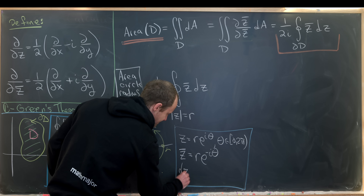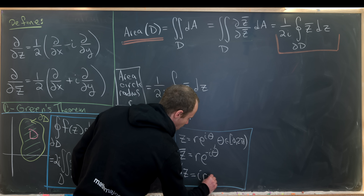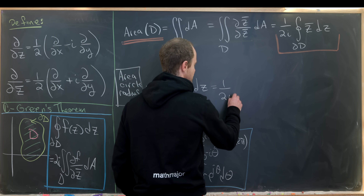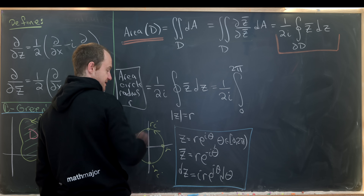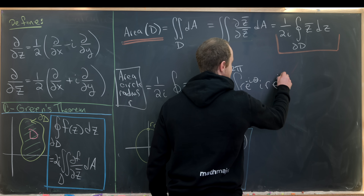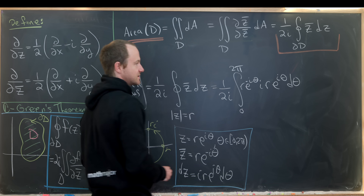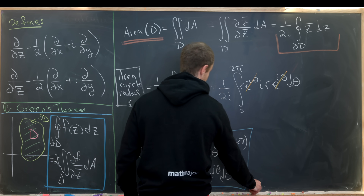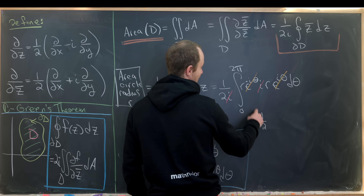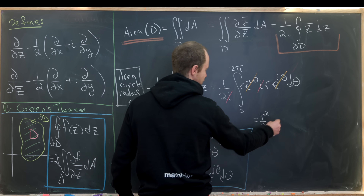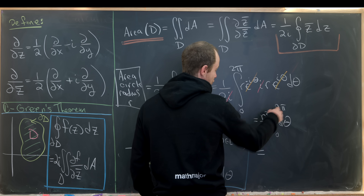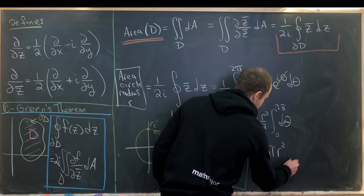We also need dz = ir·e^{iθ} dθ. Substituting everything in, we have (1/2i) times the integral from 0 to 2π of r·e^{−iθ} · i·r·e^{iθ} dθ. The e^{−iθ} cancels with e^{iθ}, and the i in the numerator cancels with the 2i in the denominator, leaving (r²/2) times the integral from 0 to 2π of dθ. That integral equals 2π, and the 2π cancels with the 2, leaving us with πr².